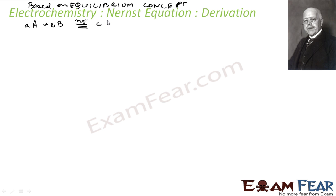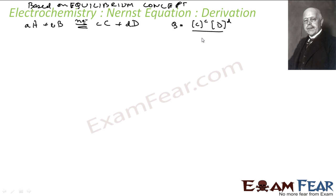You get C moles of capital C plus D moles of capital D. That is the reaction. So at any point of time, Q is nothing but the concentration of C raised to small c, times concentration of D raised to small d, divided by concentration of A raised to small a, times concentration of B raised to small b. And at equilibrium, Q is equal to K.